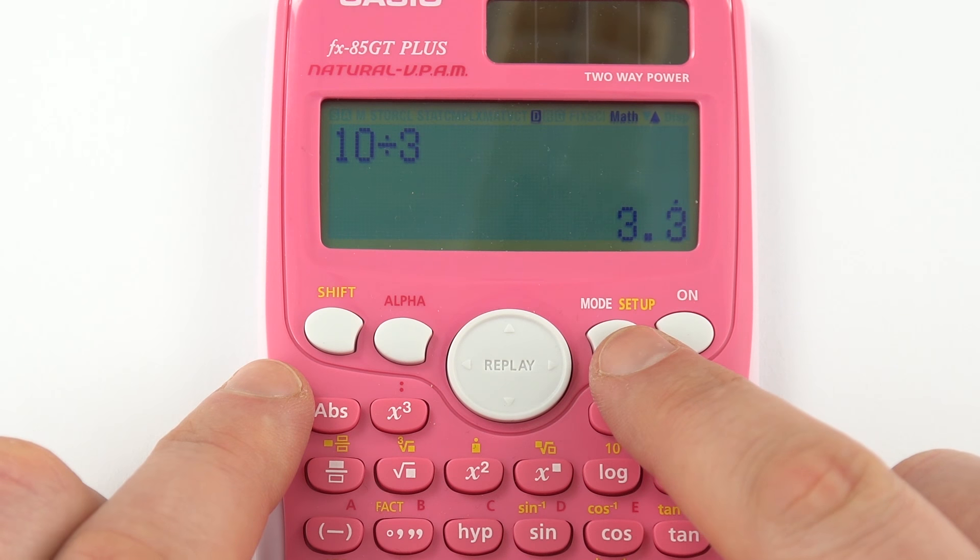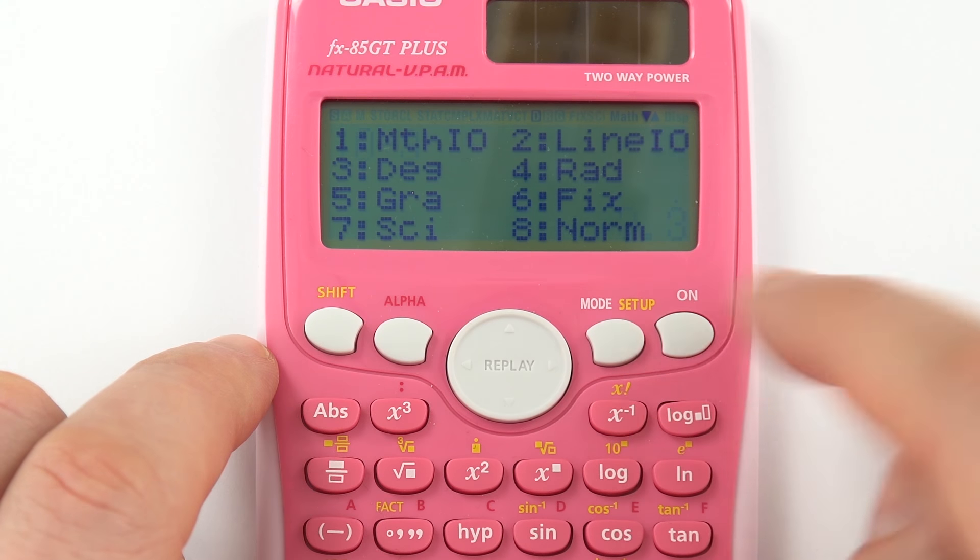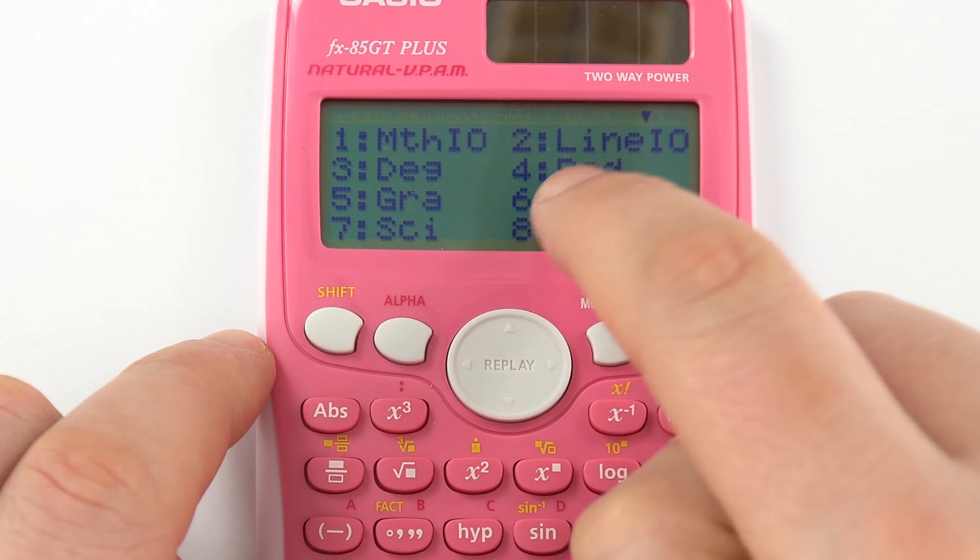And the way to do that is to go to the setup, and this is for Casio calculators. If you press shift setup, then you can see all of these different numbers here.